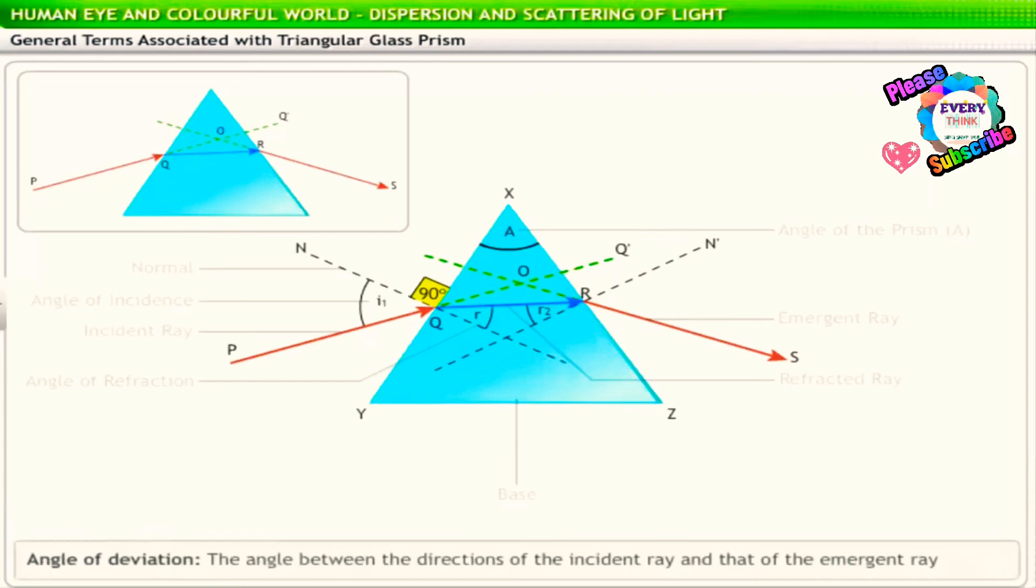The angle between the directions of the incident ray and that of the emergent ray is called the angle of deviation and is represented by Greek letter delta or theta D or the English letter D. Here, angle Q-OR is the angle of deviation.